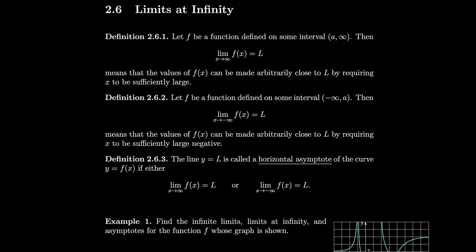Section 2.6, Limits at Infinity. Let f be a function defined on some interval from a to infinity — in other words, all numbers bigger than a. Then the limit of f as x approaches infinity equals L means that the values of f can be made arbitrarily close to L by requiring x to be sufficiently large.